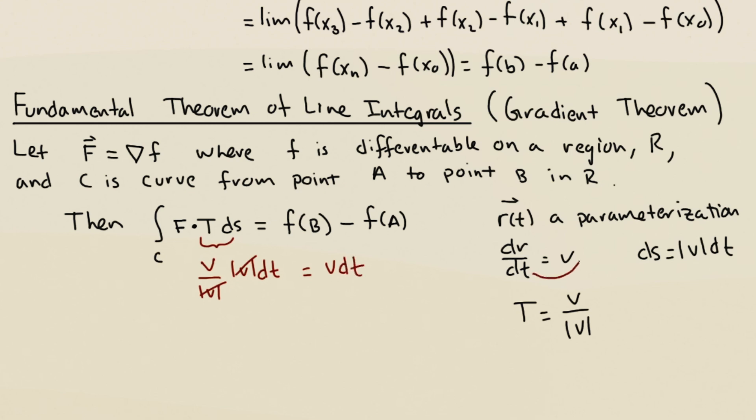But you see, if I move this dt over to the other side, then this would just be dr. So sometimes to compress these symbols on the left-hand side, they'll trade out t ds. They'll just write that as dr. It's the same thing.